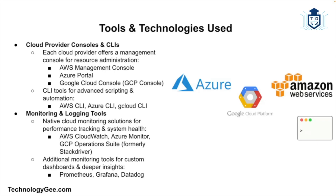Cloud admins use a variety of tools and technologies to manage and maintain cloud environments. Each cloud provider offers a management console — such as the AWS Management Console, Azure Portal, and GCP Console — along with command line interface tools for administering cloud resources. For monitoring and logging, cloud admins rely on tools like AWS CloudWatch, Azure Monitor, and GCP Stackdriver to track performance metrics, system health, and logs.